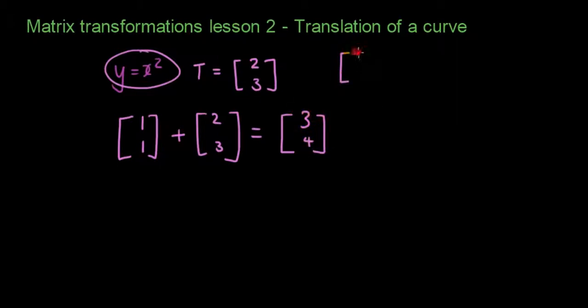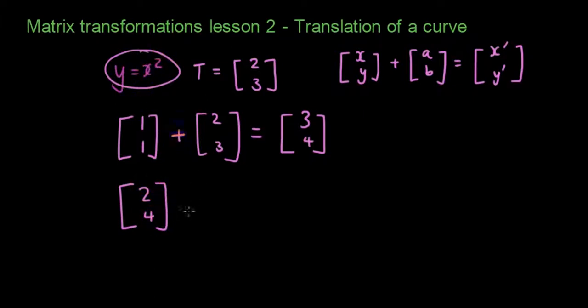If you guys remember this formula, original point plus the translation matrix gives you the image, which is x' y'. Let's do another point. When x is 2, y is 4. Using the formula, 2 squared is 4 plus the translation matrix 2, 3, and the answer is 4, 7.